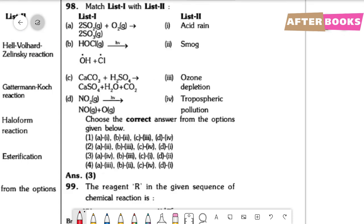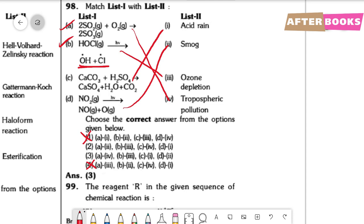Question number 98. Match reactions to effects: (B) generates free radicals → ozone layer depletion (3). This eliminates options 1 and 4. (A) SO2 + O2 → SO3 → tropospheric pollution (4). (C) is acid rain reaction. (D) NO2 → NO + O → smog reaction. The correct option is option 3.